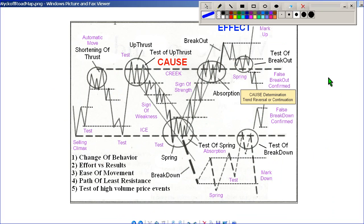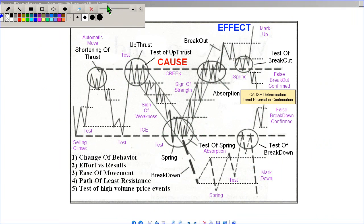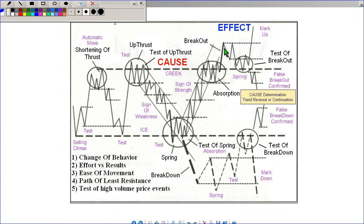This is the combined Wyckoff roadmap made up of the distribution and accumulation patterns seen together. The dotted lines are the range, and in between the range you get multiple effects of what could happen. You get price rallying and breaking out, then a test, breaking out, coming back to test and marking up, or you can have a failure breakout where it falls back into the range. You can have price breakdown, come back to test the breakdown and continue on, or the breakdown fails and price backs into the range.